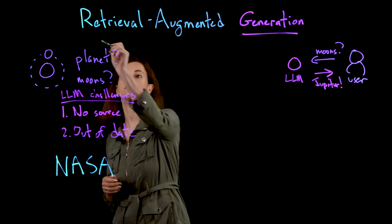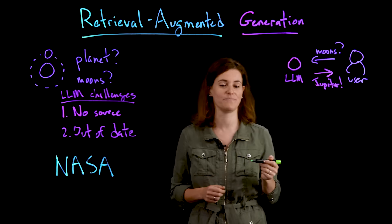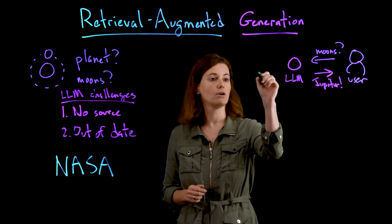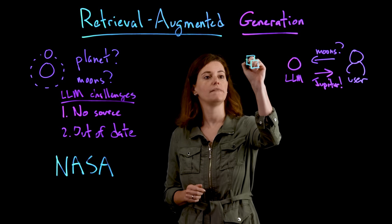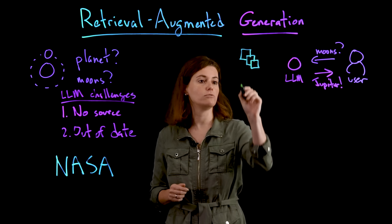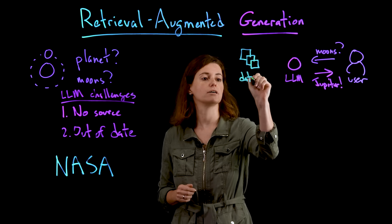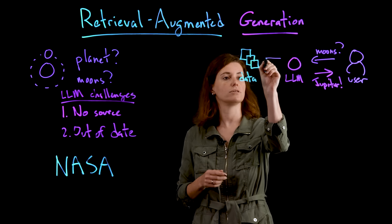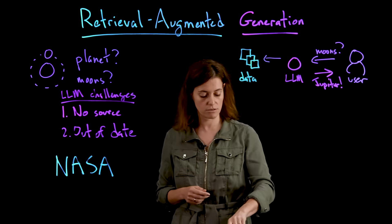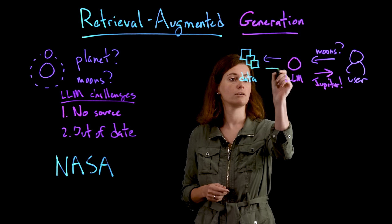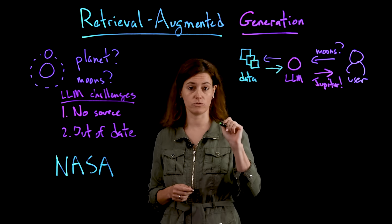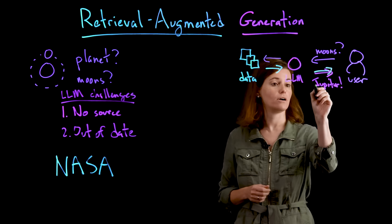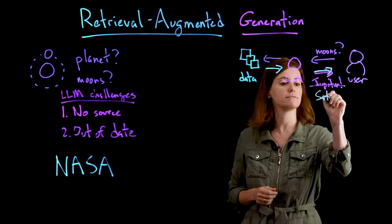What happens when you add this retrieval augmented part? That means that now, instead of just relying on what the LLM knows, we are adding a content store. This could be open, like the internet, or closed, like some collection of documents, collection of policies, whatever. The point, though, is that the LLM first goes and talks to the content store and asks it to retrieve information that is relevant to the user's query. And now, with this retrieval augmented answer, it's not Jupiter anymore — we know that it is Saturn.